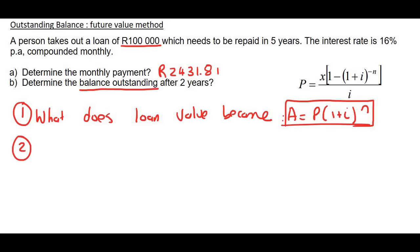Number two, we need to see how much are our monthly payments becoming. So remember, you're paying this back to the bank every month. And so we need to see what those payments are going to become. What does monthly payments become? And for that, use the future value formula. Hence the name future value method.